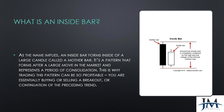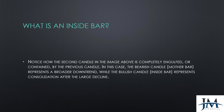Even though we're talking about candles, we're not talking about candlestick patterns tonight — not candlestick anything. If we're using a candlestick chart, the first candle is named the mother candle or mother bar. It's a pattern that forms after a large move in the market and represents a period of consolidation. Notice how the second candle is completely engulfed or contained in the previous candle — the bearish mother bar represents a broader downtrend, while the bullish inside bar represents consolidation after a decline.